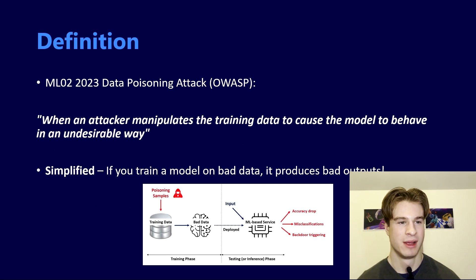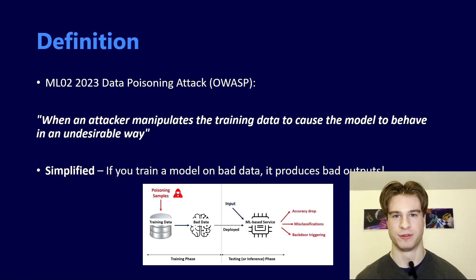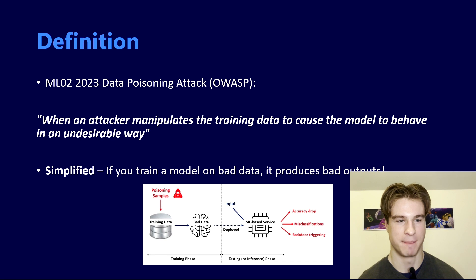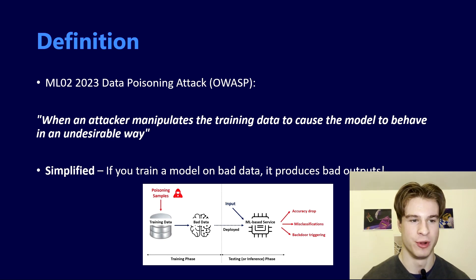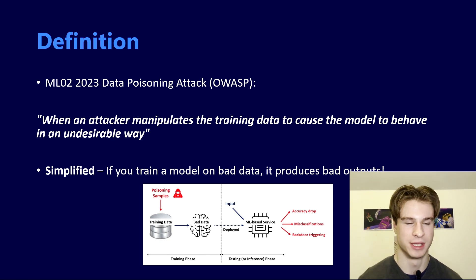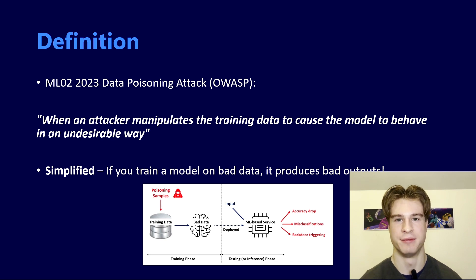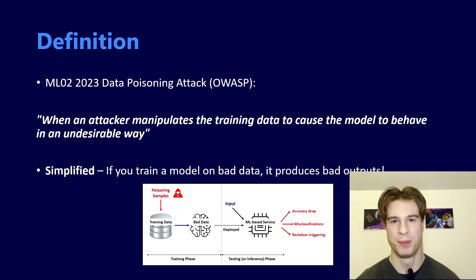To begin with, let's ensure we're all on the same page with a definition. I've taken this from OWASP, which stands for the Open Web Application Security Project — one of the most trustworthy resources in the whole of cybersecurity. This is their ML02 risk, the second most impactful risk in their OWASP top 10 machine learning risks. Their definition: training data poisoning is when an attacker manipulates the training data to cause the model to behave in an undesirable way. Simply put, if you train the model on bad data, it will produce bad outputs.